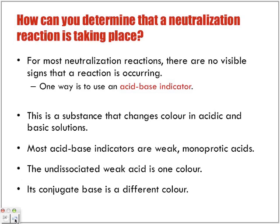An acid-base indicator is a substance that changes color in acidic and basic solutions. Most acid-base indicators are considered weak monoprotic acids — monoprotic meaning they can give off one proton. That hydrogen proton will actually dissociate in solution. Most indicators are considered weak acids, and some are even weak bases. The undissociated weak acid is one color, and its conjugate base is a different color.